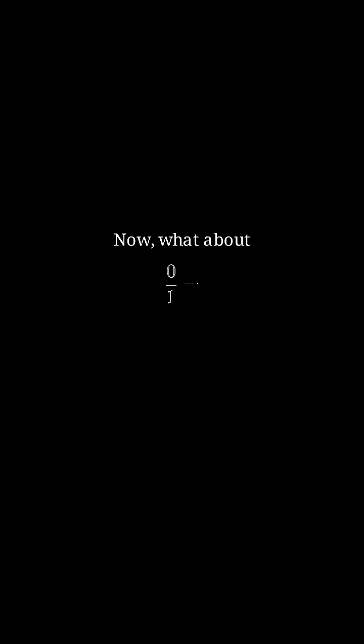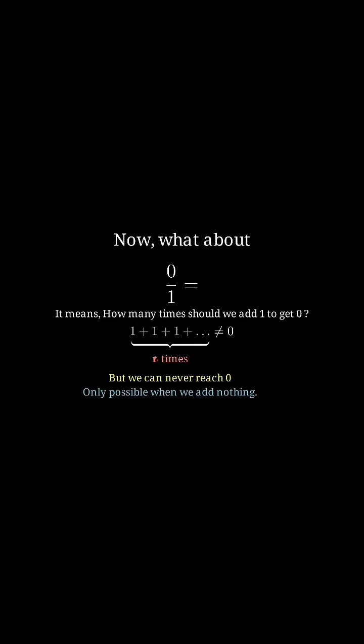Now, what about 0 by 1? It means how many times should we add 1 to get 0. But we can never reach 0. Only possible when we add nothing. So we clearly see that 0 by 1 equals 0.